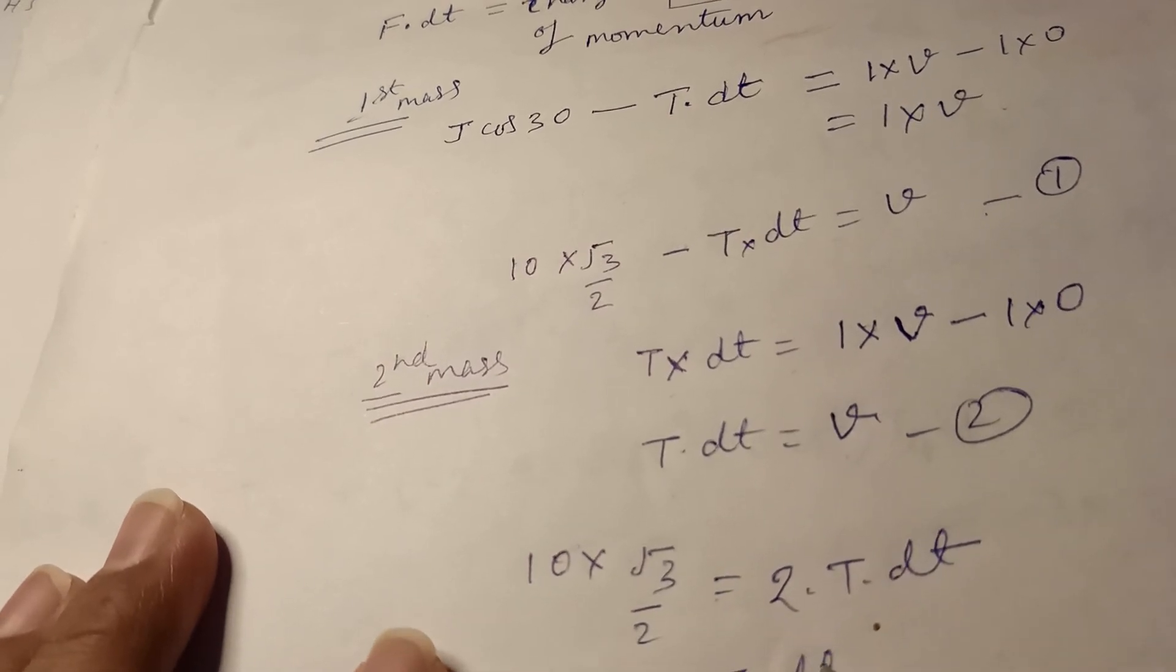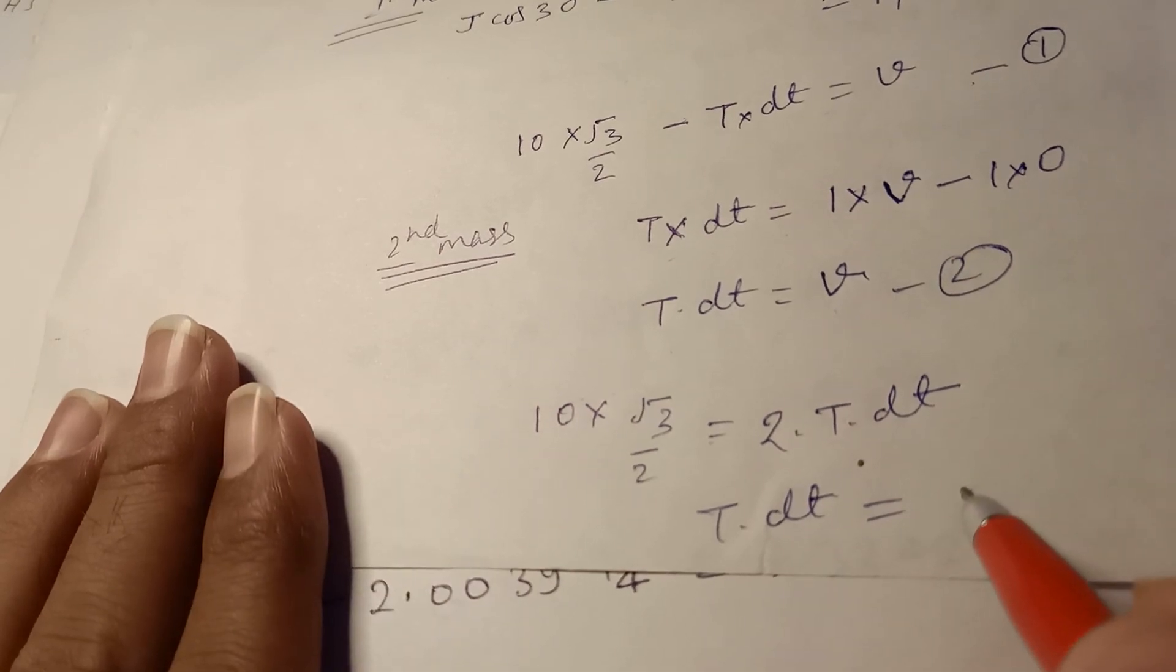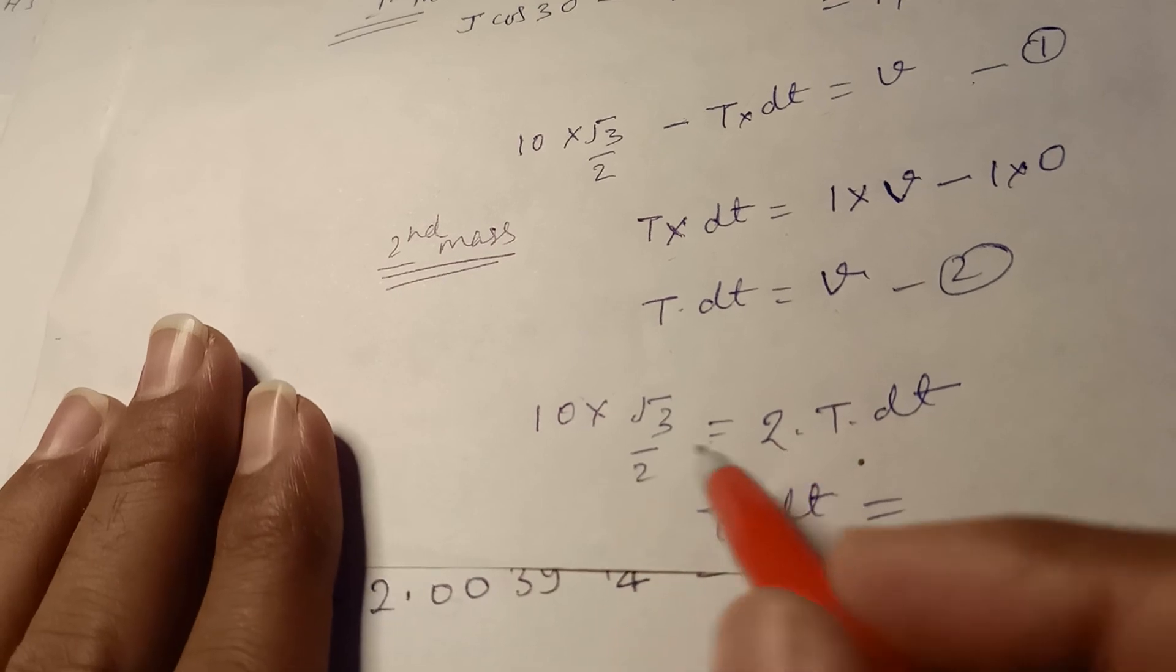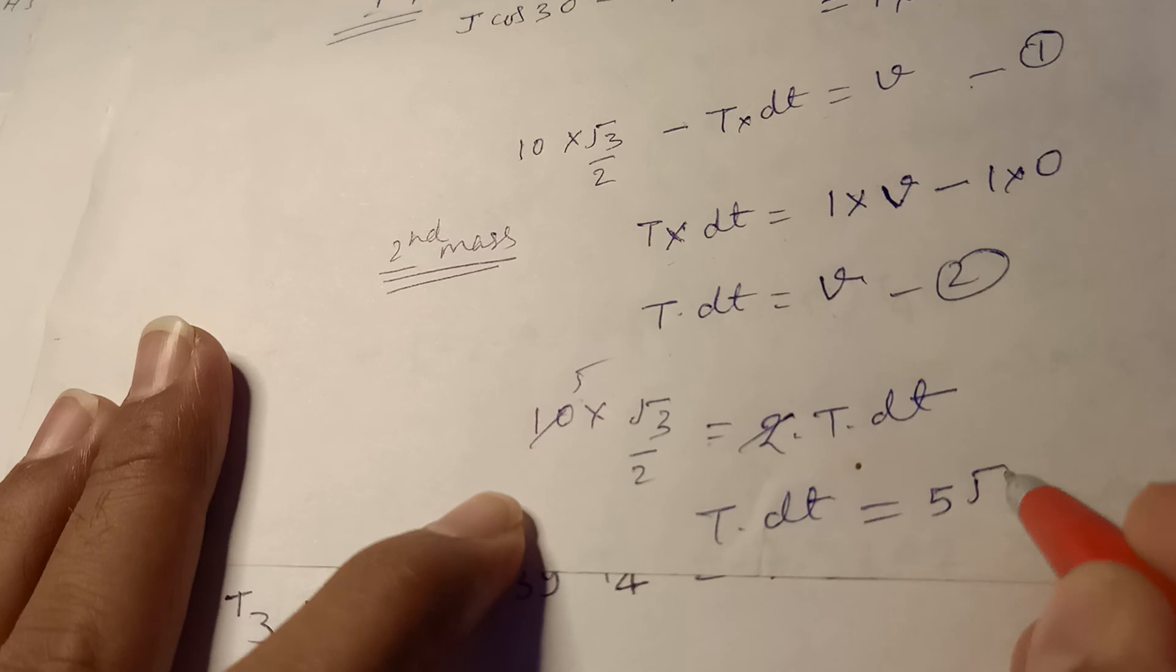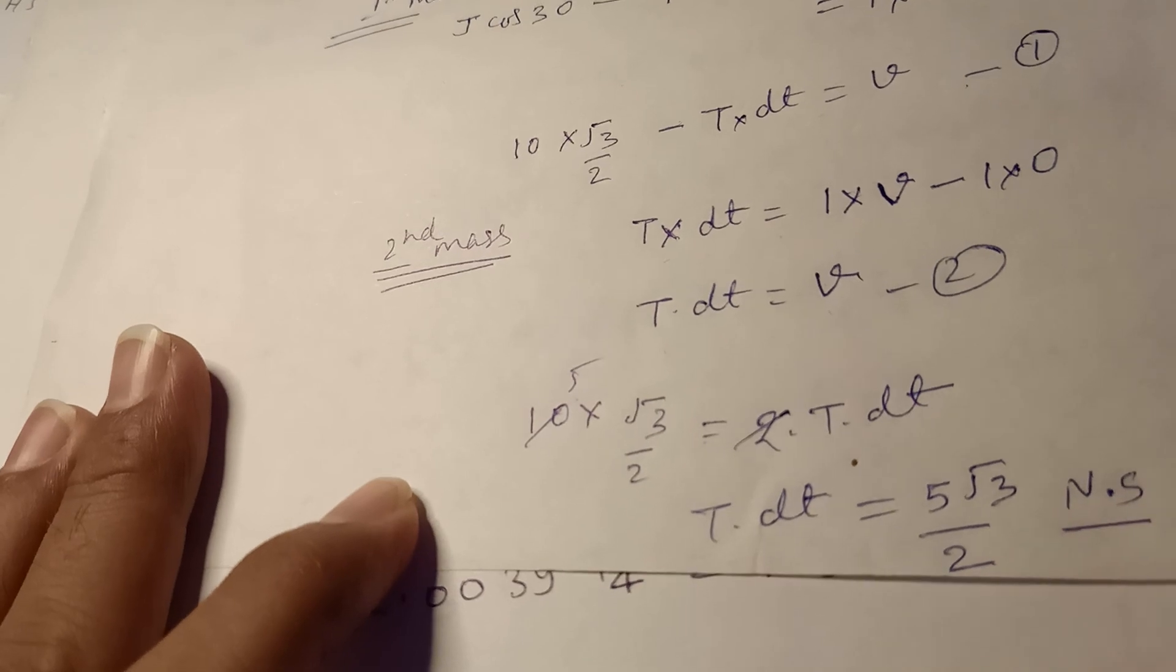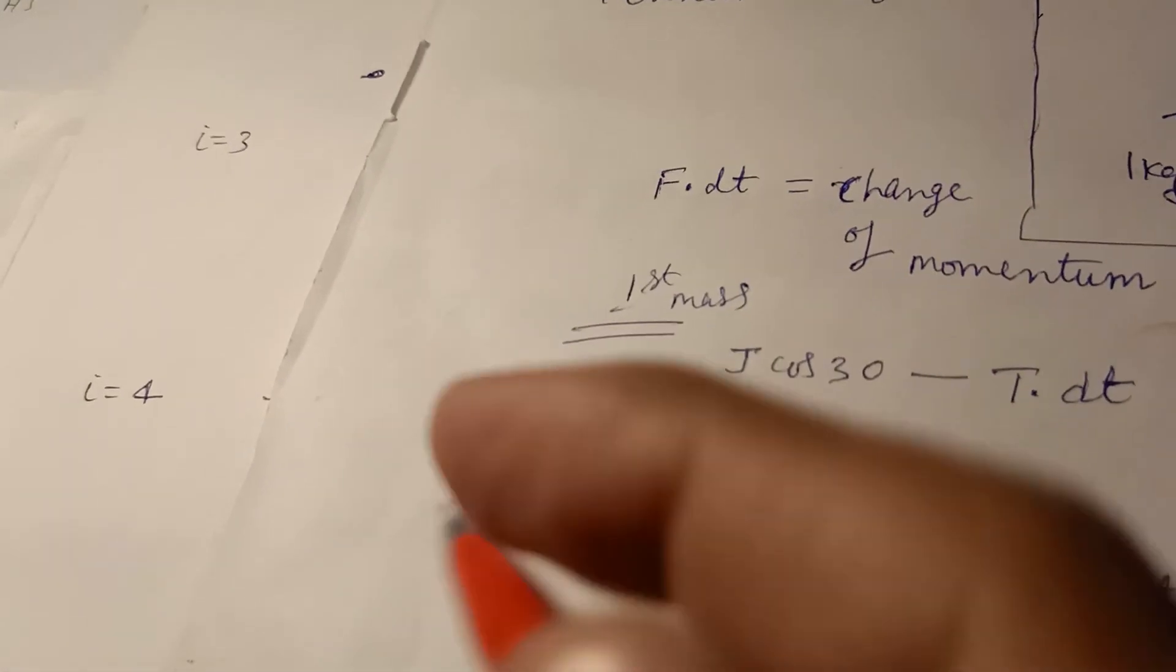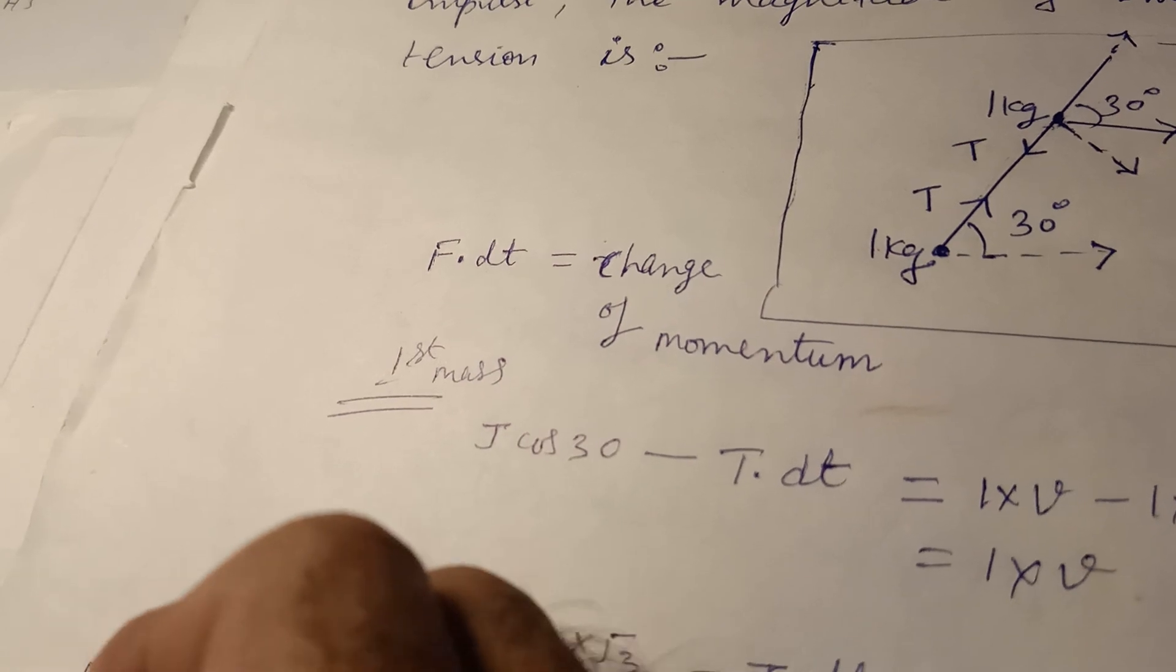T dt is equal to, dividing by 2, we get 5 root 3 by 2 Newton-second. This is the impulse due to tension. This was all about it.